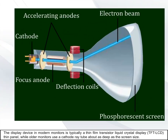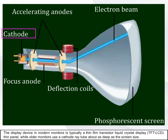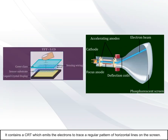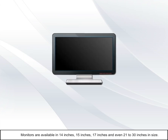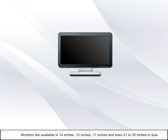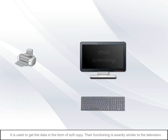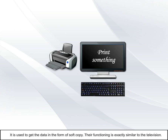Older monitors use a cathode ray tube (CRT), about as deep as the screen size, which contains a CRT that emits electrons to trace a regular pattern of horizontal lines on the screen. Monitors are available in 14, 15, 17, and even 21 to 30 inches in size.